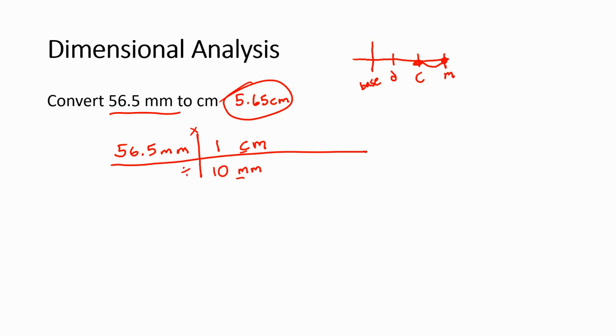Long story short, this is a way of canceling out units. Because if I divide millimeters by millimeters, they cancel each other out. So I can get rid of them. And that's going to leave me with centimeters. But I also have to multiply and divide the numbers. So on my calculator, what I'm going to do is say 56.5 times one divided by 10. And if you do that, you get the same answer that we started with 5.65 centimeters.